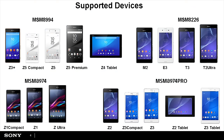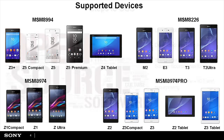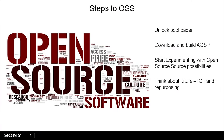Those are the supported devices. We support everything from the old dual-core MSM8226 like M2, E2, T3 and T2 Ultra, up to the newest devices — the MSM8994 — including the Z3 Plus, Z5 Compact, Z5, Z5 Premium and Tablet. Since all those devices are supported in the same repository and the same kernel, the features that work on one will work on all. And if you apply a patch to fix something on one of them, you will actually fix all devices. The same thing applies if you add a feature — it will be on all devices.